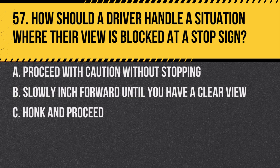Question 57. How should a driver handle a situation where their view is blocked at a stop sign? A. Proceed with caution without stopping. B. Slowly inch forward until you have a clear view. C. Honk and proceed. Answer: B. Slowly inch forward until you have a clear view. Caution is essential when visibility is restricted.